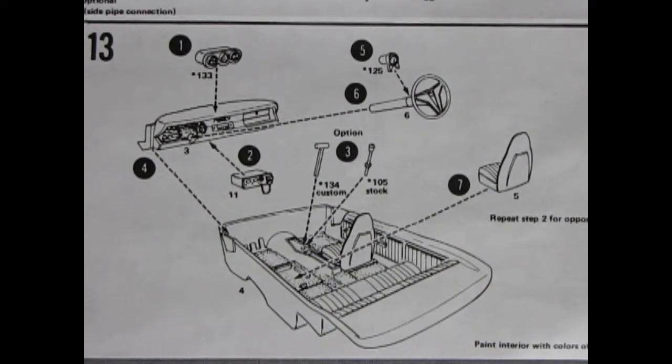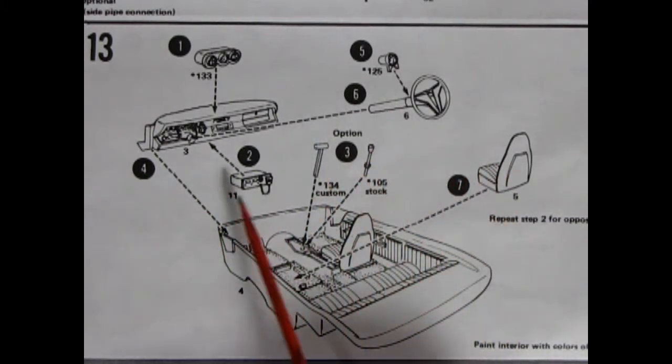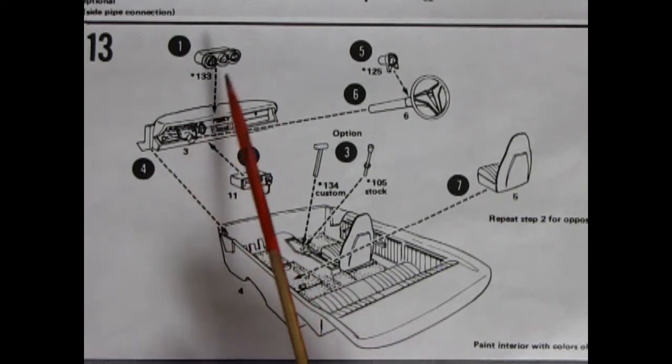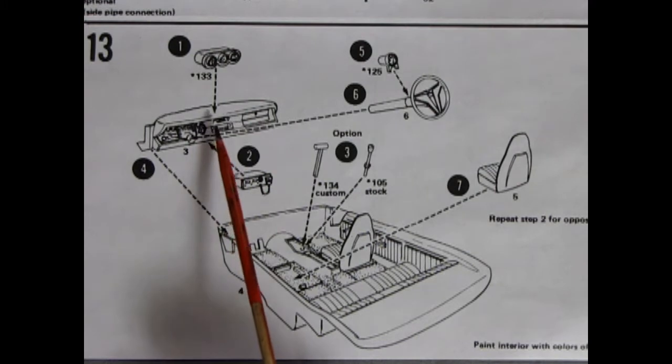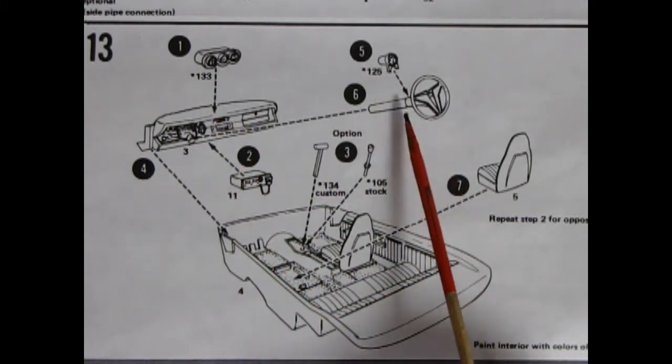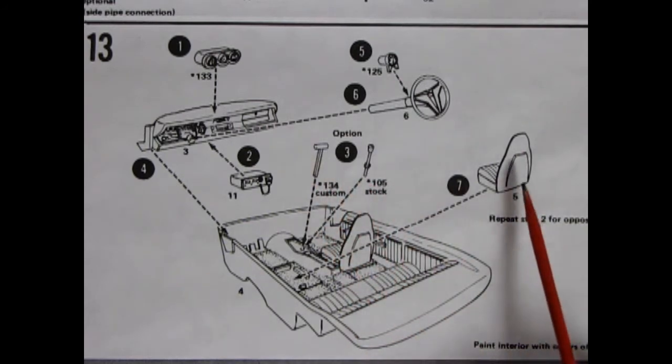Panel 13 shows our groovy interior going together. And you do get a lot of different options. You get the classic 70s CB radio, which will glue up under the dash. You also get these chrome instrument clusters, which you can glue in on top of the dashboard. A tachometer, our steering wheel with the console, a choice of different shifter levers, and our seats all glue into this interior tub.